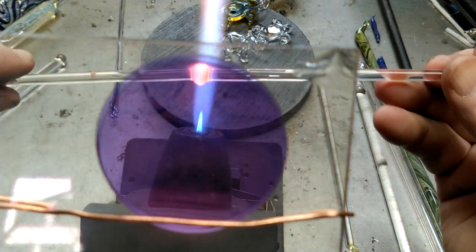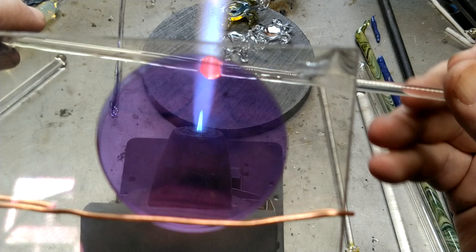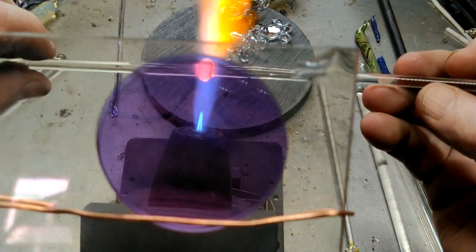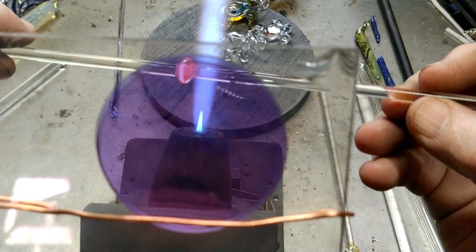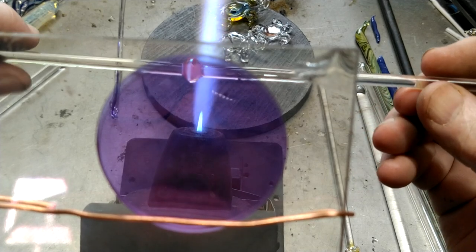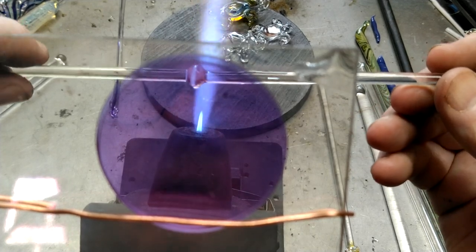That's another thing you can try and practice: heating up two pieces of glass and then pressing them but then also making them spin even, so it's not wonky.